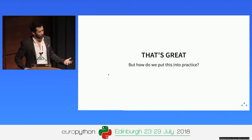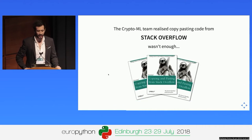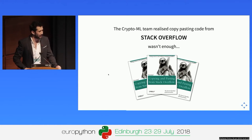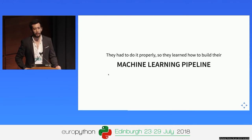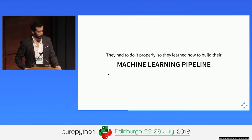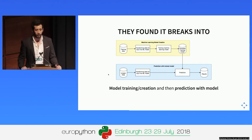Now we know conceptually what we need to do, but how do we put it in practice? The CryptoML guys found the concept of machine learning pipelines. They were copy-pasting a lot of code from Stack Overflow, but realized they needed to understand how it works. In order to do it properly, they needed to build a more mature infrastructure around their machine learning. They found that, in a generic and very abstract perspective, machine learning pipelines break into two different workflows: model training and creation, and then using that model to predict unseen data.